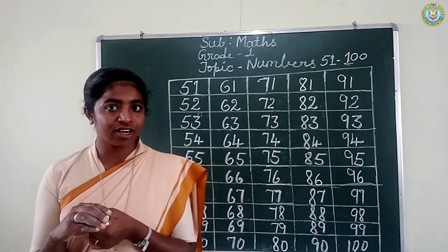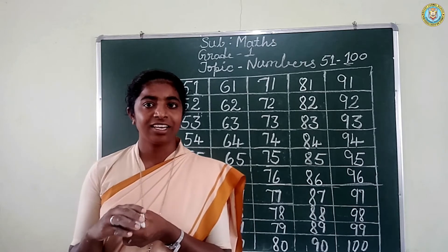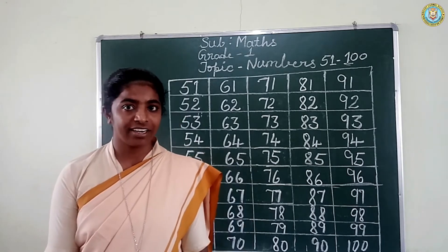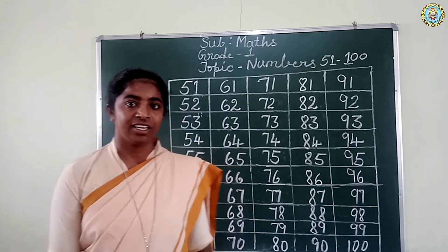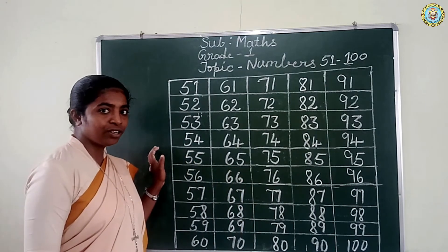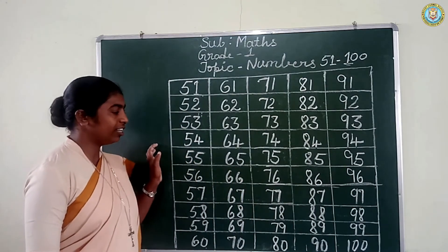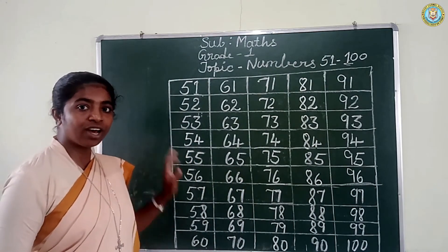You all know how to count the numbers, right children? You have learnt the numbers to count. Now look at the board. I have written numbers 51 to 100.